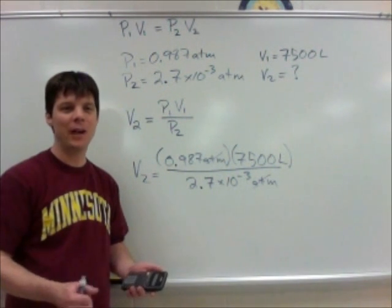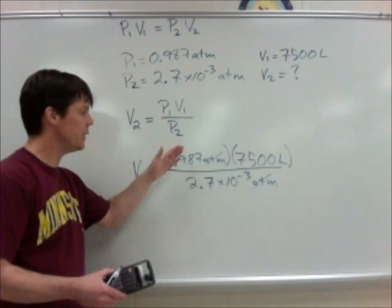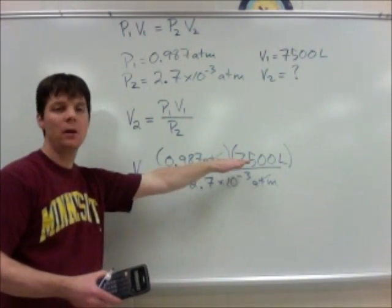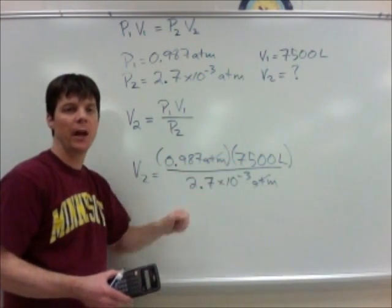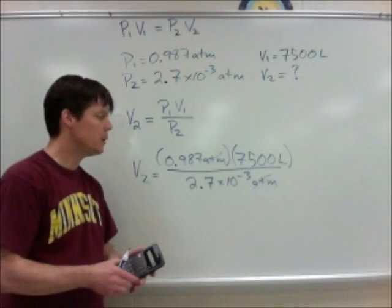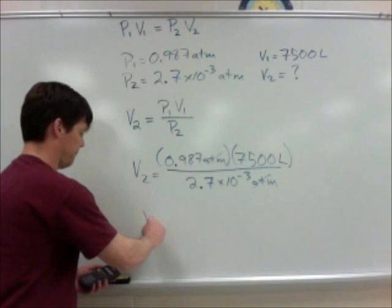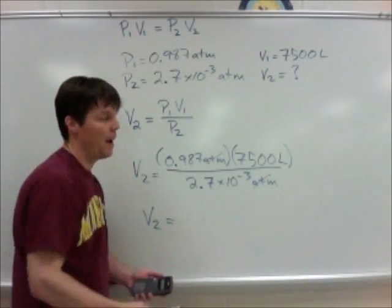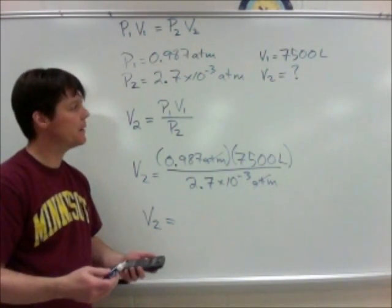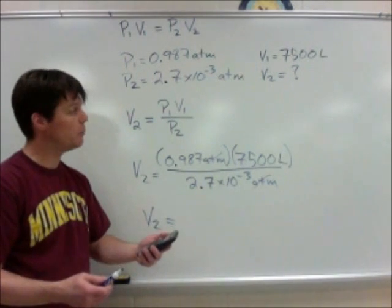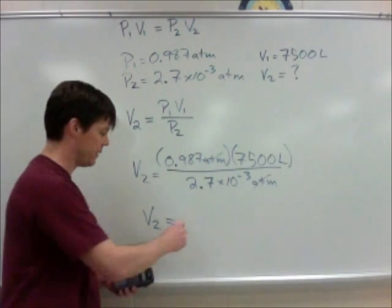I'm ready to evaluate my answer now. So what I'd like to do is multiply 0.987 by 7,500, and I'll divide that by 2.7 times 10 to the minus 3. After doing this, I found an answer I'm calculating to be 2.7 times 10 to the 6.